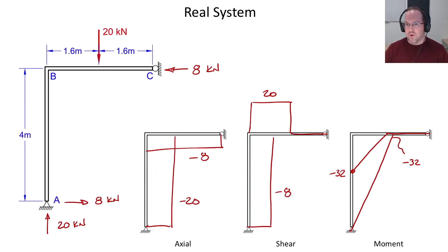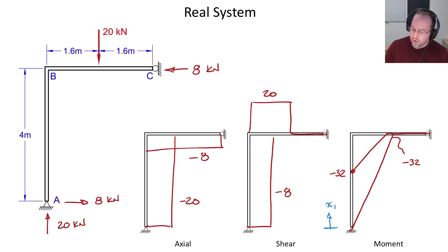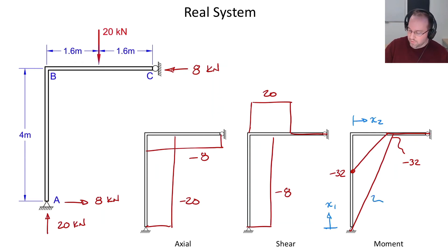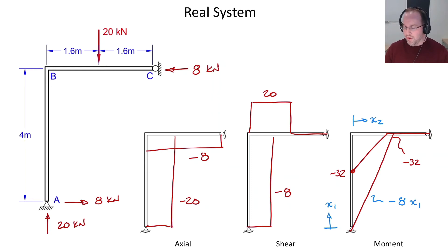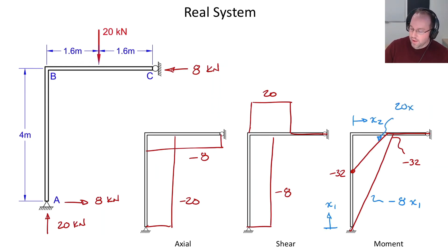When applying the principle of virtual work it's useful to have equations for each diagram. Using coordinate x1 for the column and x2 for the beam, the moment in the column is M_r = negative 8 times x1 — obtained by integrating the shear diagram. For the beam segment the moment expression is M_r = 20 times x2 minus 32, where the minus 32 ensures the correct intercept at x2 equals zero.